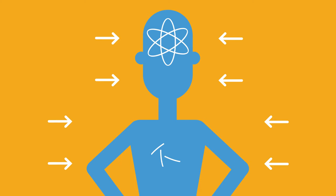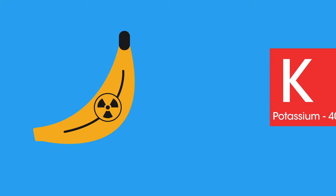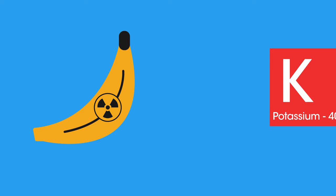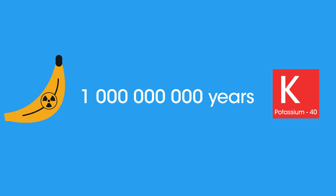But don't worry too much. We all have in our bodies radioactive isotopes we take in from our environment. For example, bananas supply us with very small amounts of radioactive potassium-40, which has a half-life of just over 1 billion years.